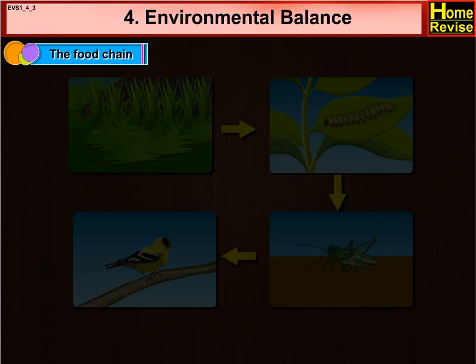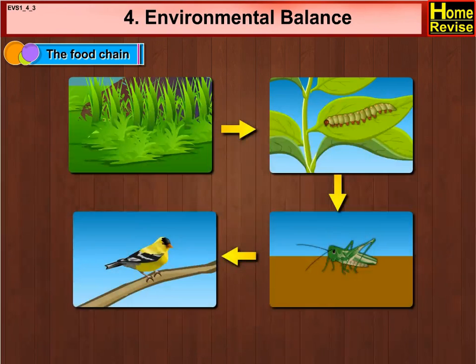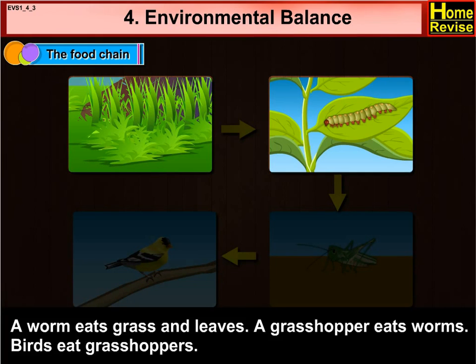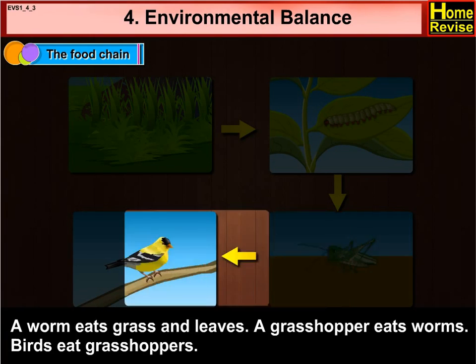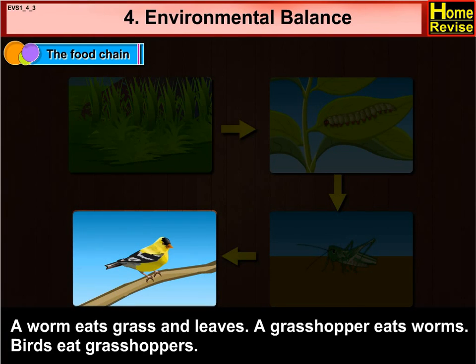The food chain. Look at the pictures. A worm eats grass and leaves. A grasshopper eats worms. Birds eat grasshoppers.